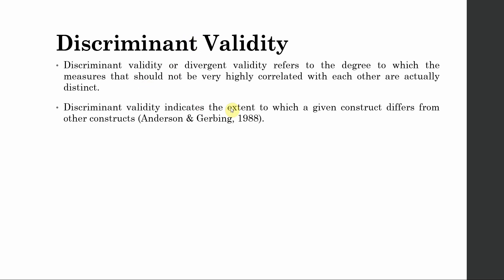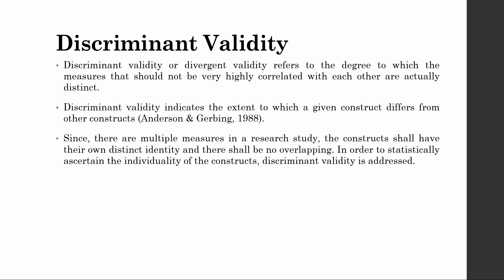Discriminant validity indicates the extent to which a given construct differs from the other constructs in the study. There are multiple measures in a research study. The constructs shall have their own distinct identity and there shall be no overlapping. In order to statistically ascertain the individuality of constructs, discriminant validity is addressed.